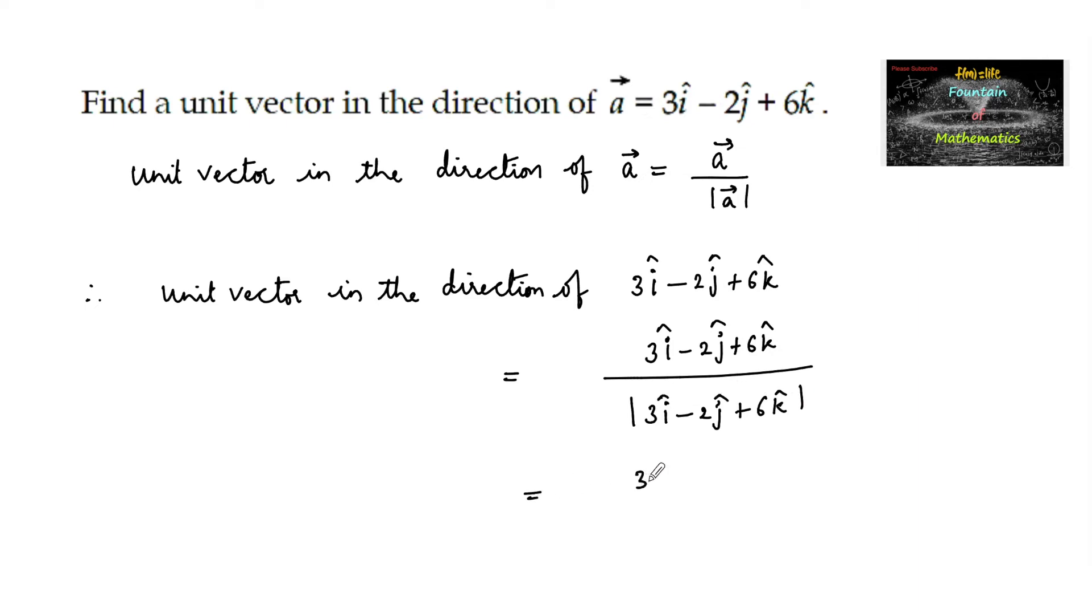which is equal to 3i minus 2j plus 6k cap upon root over 3 square plus minus 2 whole square plus 6 square